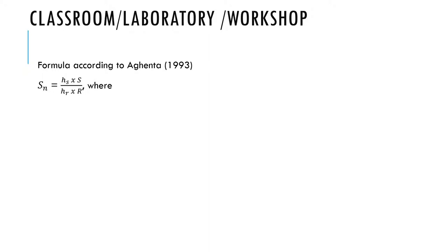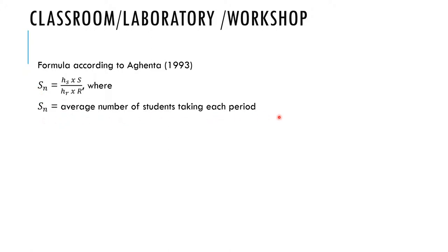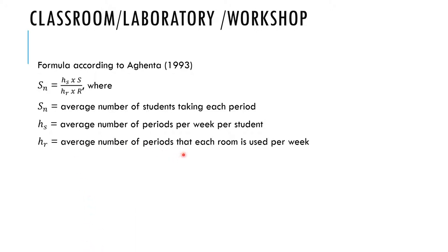There is a formula as presented by Agenta (1993). The formula is: SN divided by HS, times S divided by HR. The first symbol SN represents the average number of students taking each period. HS represents the average number of periods per week per student. S represents the average number of periods each room is used per week, and HR represents the average number of times each room is used per week.